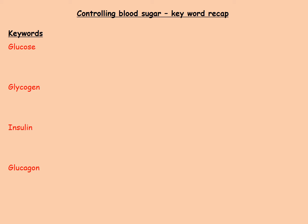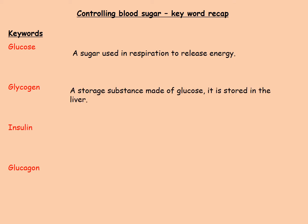Pause the video and write down or think of your best definition for each of those terms. Glucose is a sugar — a carbohydrate — used in respiration to release energy. Glycogen is lots of glucose molecules joined together; it is a storage molecule made and stored in the liver and also in muscle cells.